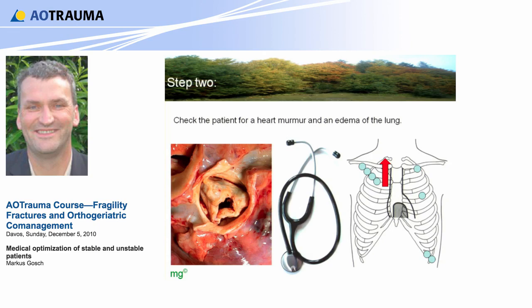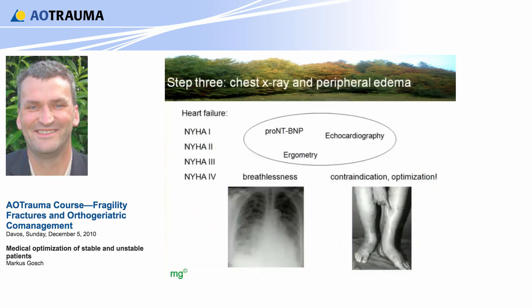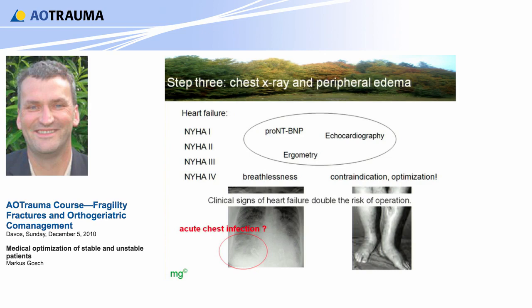Step 3: the chest X-ray, which is also important for geriatric patients. On the one hand, you can see an edema of the lung, and you can also see a chest infection, which may be an indication for a delay of the operation. On the other hand, you also have to look for peripheral edema as a sign of heart failure. If you have heart failure with breathlessness, it's a contraindication — it's an indication for optimization of the patient. Look at the chest X-ray, look at the peripheral edema.